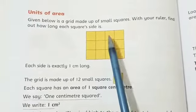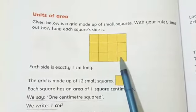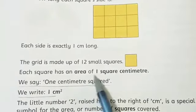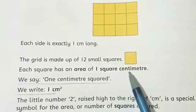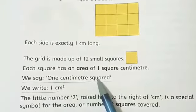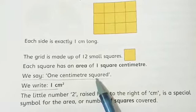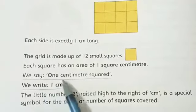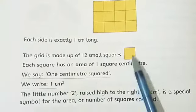The grid is made up of 12 small squares: one, two, three, four, five, six, seven, eight, nine, ten, eleven, twelve. Each square has an area of one square centimeter. We say one centimeter squared.